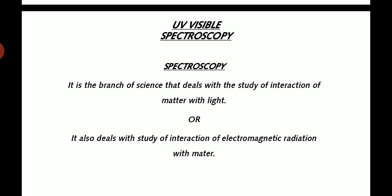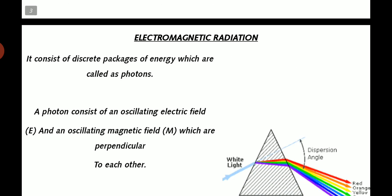Spectroscopy is the branch of science that deals with the study of interaction of matter with light. It is also the study of interaction of electromagnetic radiation with matter. So what is electromagnetic radiation?